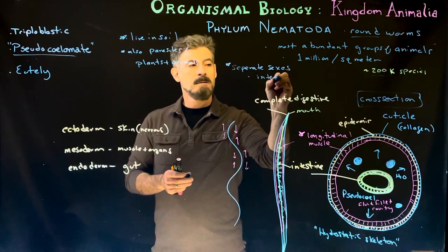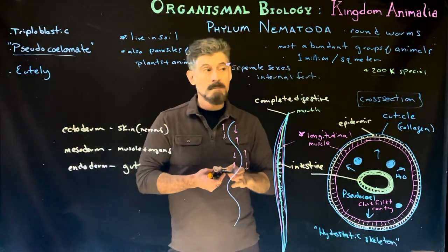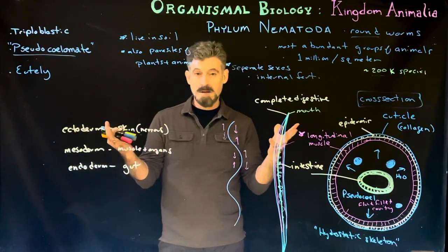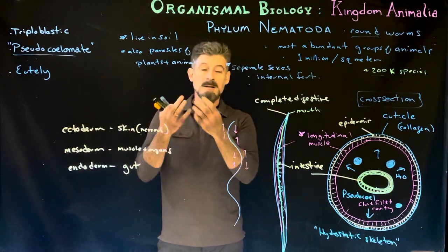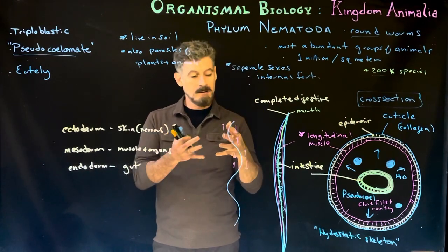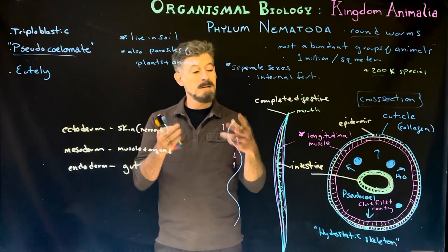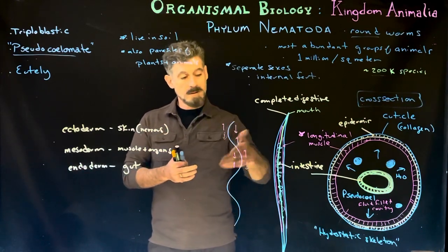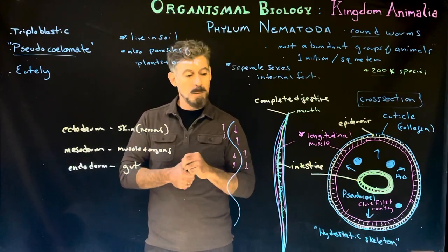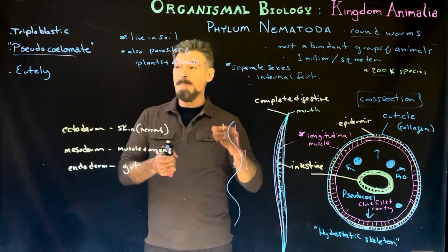They are separate sexes with internal fertilization, so they have to mate. Some other organisms we've discussed do broadcast spawning — releasing sperm and eggs into the environment — but for internal fertilization you must find a mate and exchange sperm. If they were hermaphrodites they would just exchange sperm; if male and female, the male injects sperm into the female, which is typically what happens here. There aren't particular openings; the male actually injects the sperm directly into the female.